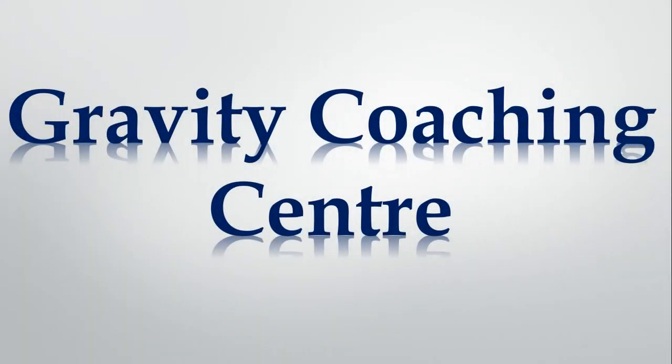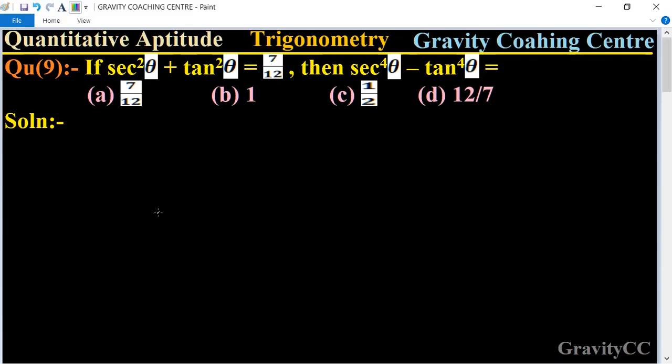Welcome to our channel Gravity Coaching Centre, Quantitative Aptitude chapter Trigonometry, question number 9. If sec²θ + tan²θ = 7/12, then sec⁴θ - tan⁴θ is equal to what?